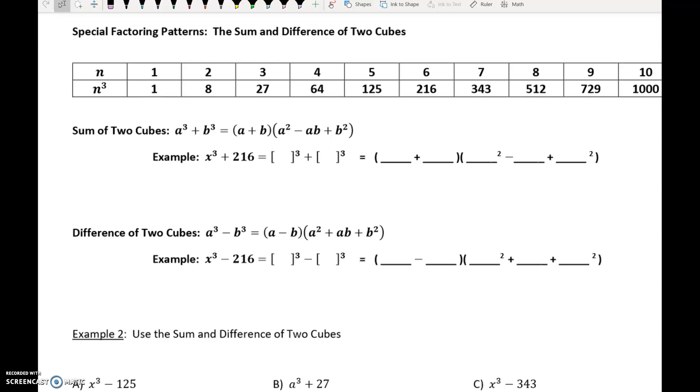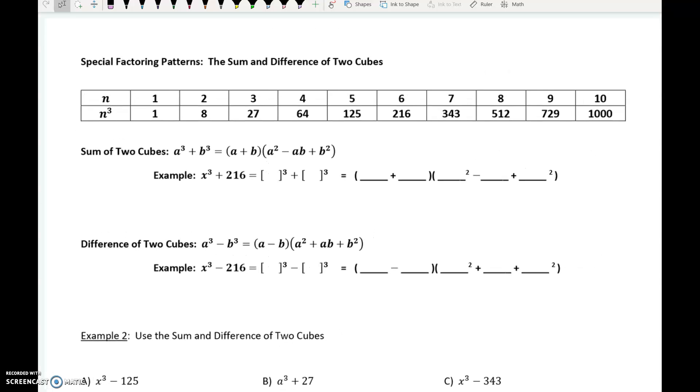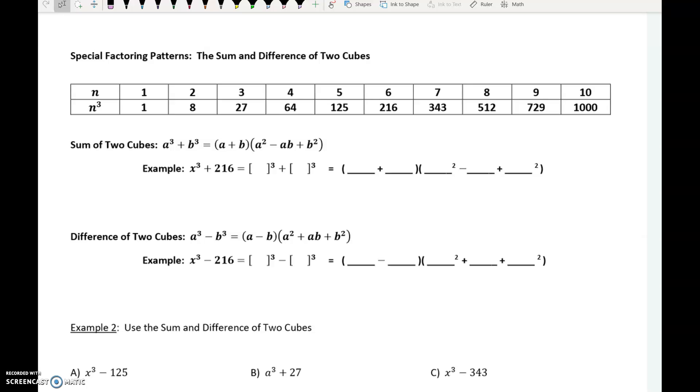Factoring special patterns or special factoring patterns: the sum and difference of two cubes. Just like we have the difference of two squares, we also have a form called the sum of two cubes. So up here is a chart that shows perfect cubes up to 1,000. If you have something cubed plus something else cubed, this formula will help you factor it. Now, I will always give you this formula, but honestly, it's not that hard to memorize, and it's easier to use if you have it memorized.